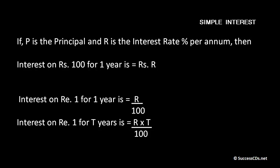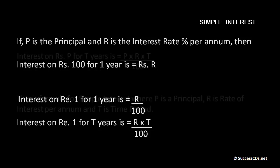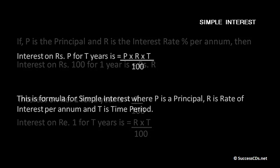If I have to calculate by unitary method, interest on rupee 1 for one year comes out to be R upon 100. This is interest on rupee 100 for one year. Now if I have to calculate interest for T years, then interest on rupee 1 for T years will be R into T upon 100.